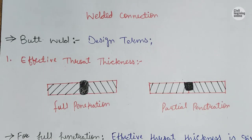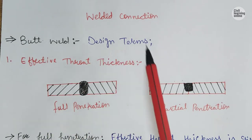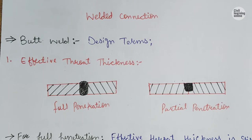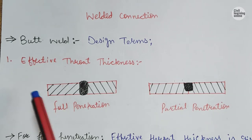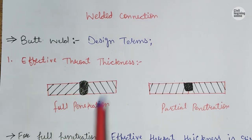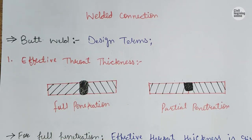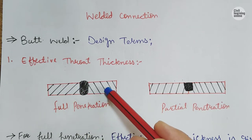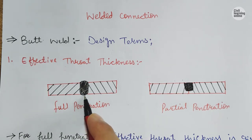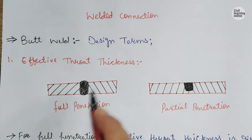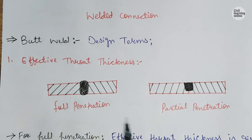This is our design term which we have to keep in mind when we solve our questions. The first term is Effective Throat Thickness. When we have full penetration, the total thickness of the plate equals the amount of penetration. The second term is partially penetrated — this is the other case.